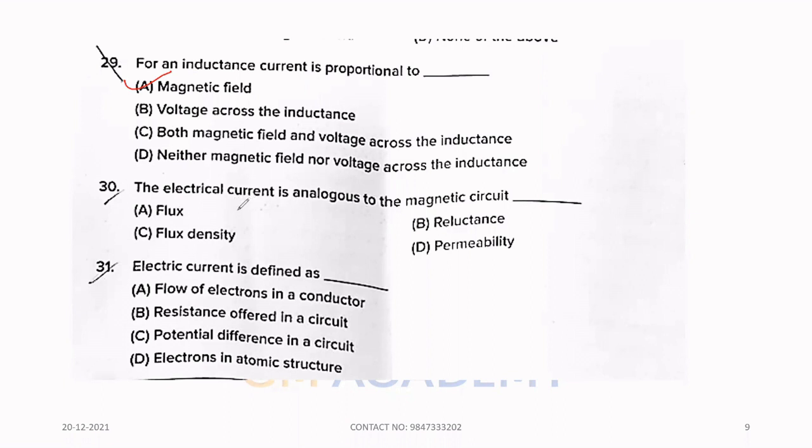Thirty. The electrical current is analogous to the magnetic circuit dash. Option A, Flux. Thirty-one. Electric current is defined as. Option A, Flow of electrons in a conductor.